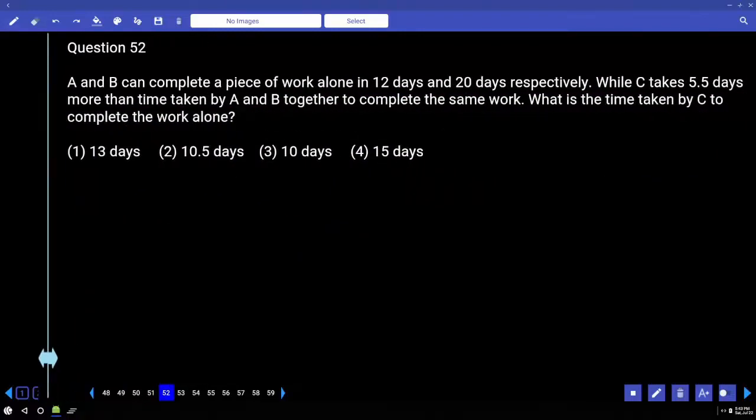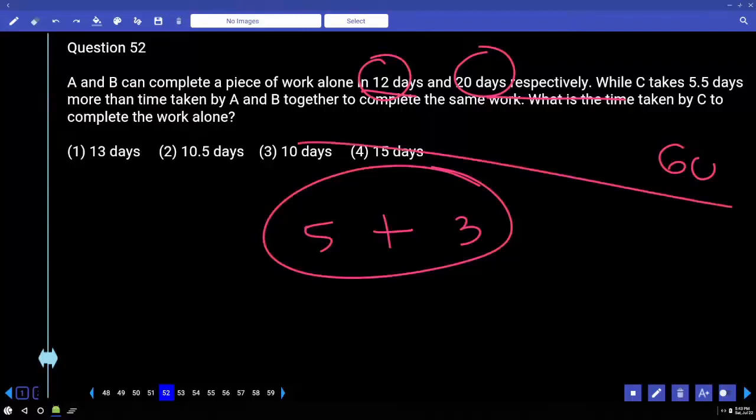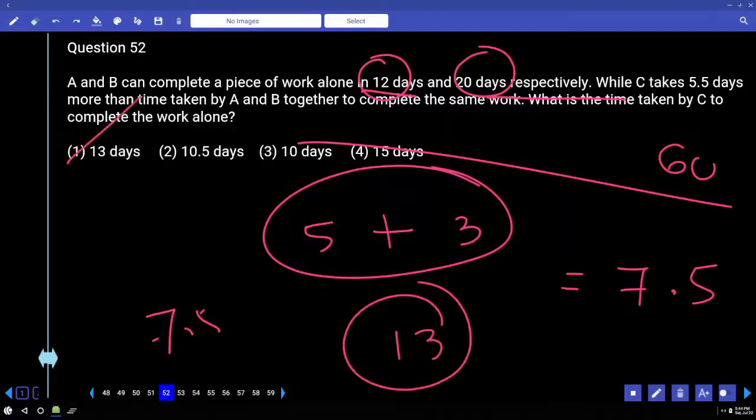A and B can complete a piece of work in 12 days and 20 days respectively, while C takes 5.5 days more than time taken by A and B together to complete the same work. What is the time taken by C to complete the work alone? A and B are 12 and 20 days. Let us consider the total work is 60 units. Efficiency of A is 5, efficiency of B is 3. If both, if A and B together work, in how many days will they complete the work? 60 by 8 means 7.5 days. So if working together A and B can complete the work in 7.5 days, C takes 5.5 more days. Means total 13 days will be taken by C to complete the work. Option 1 is the correct answer.